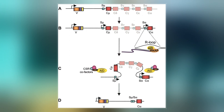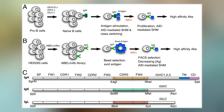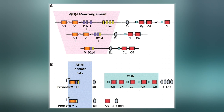Somatic hypermutation involves a programmed process of mutation affecting the variable regions of immunoglobulin genes. Unlike germline mutation, SHM affects only an organism's individual immune cells, and the mutations are not transmitted to the organism's offspring.